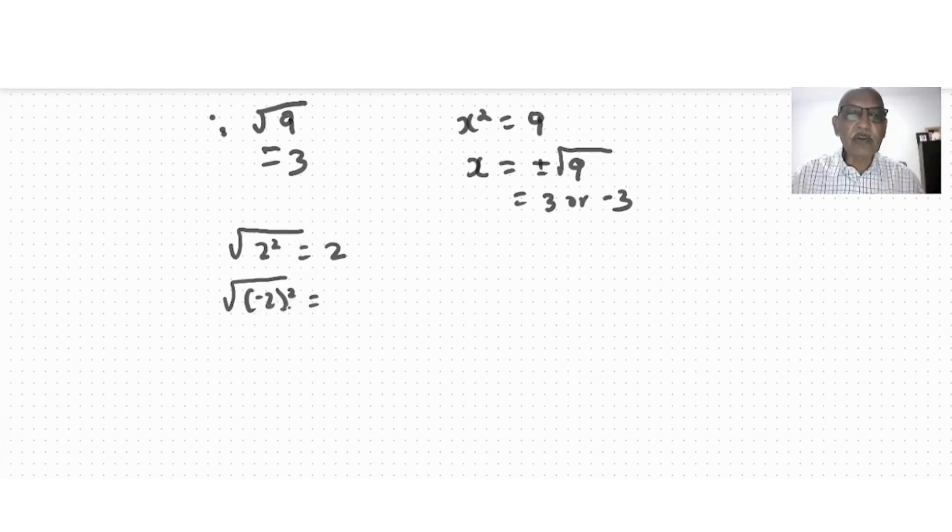Square root of negative 2 squared - in this case it will not be equal to negative 2 because square root cannot be a negative number. So negative 2 squared is 4, therefore square root of 4 is 2. So this is 2. In this case I have 2 or negative 2 here, but we have the same answer.